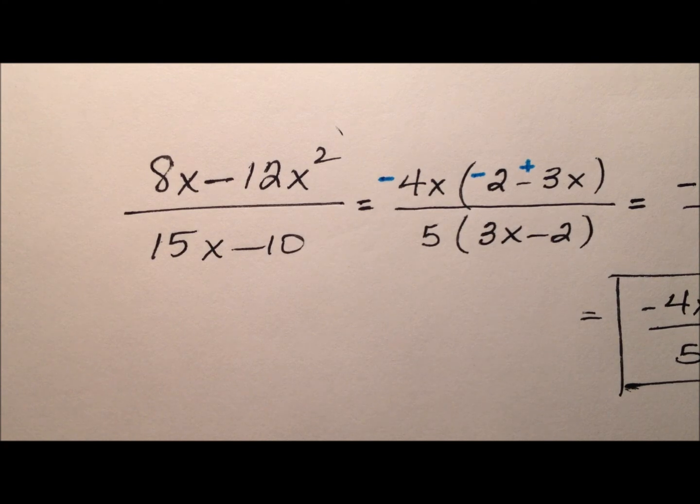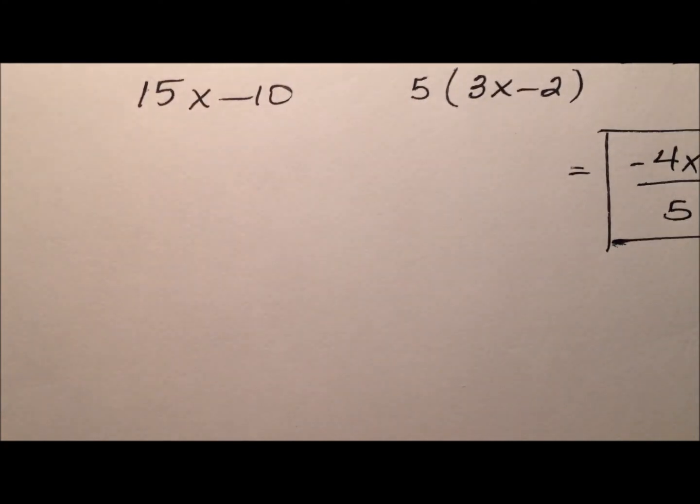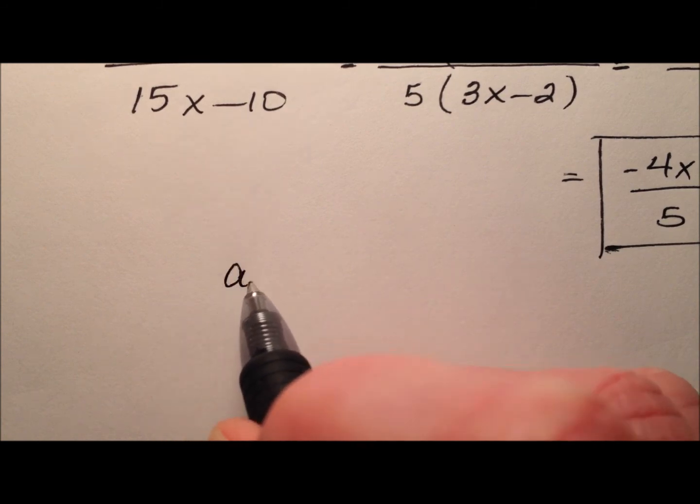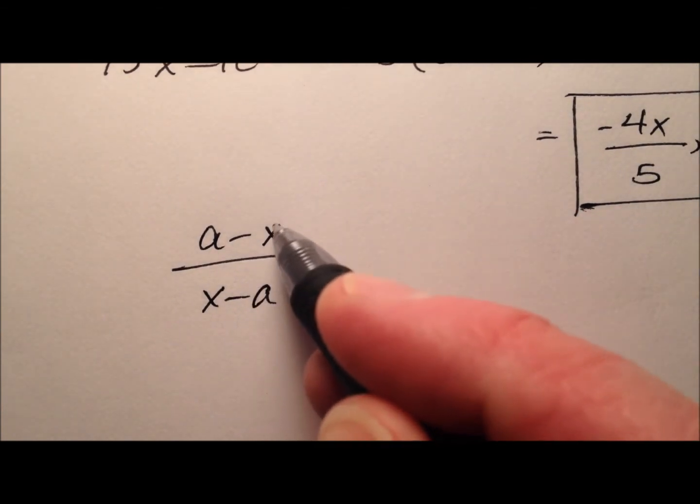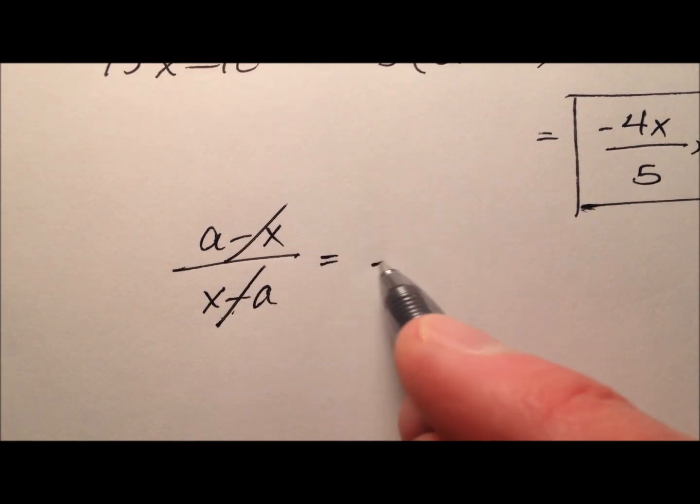So ultimately, what can I do here? Any time I have an a minus x over x minus a, I can cancel these out. And I'll just be left with negative 1.